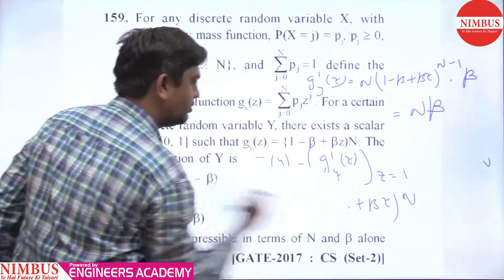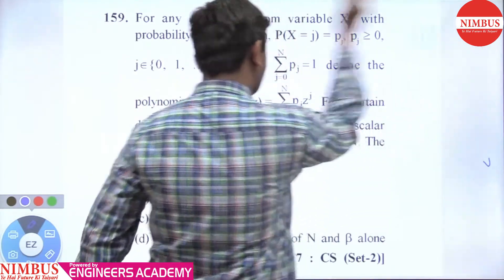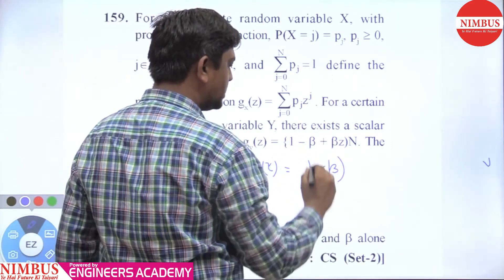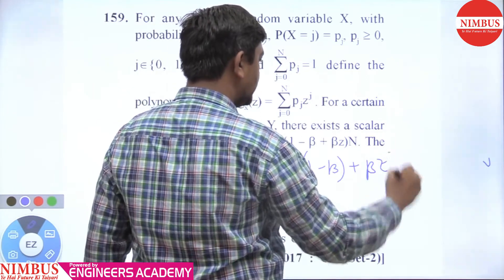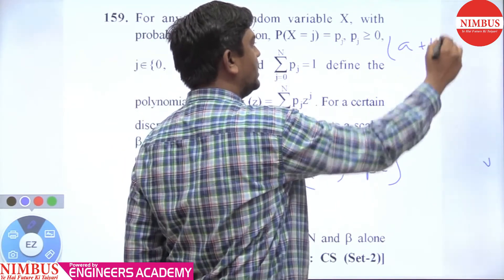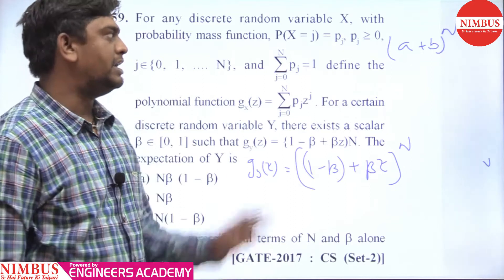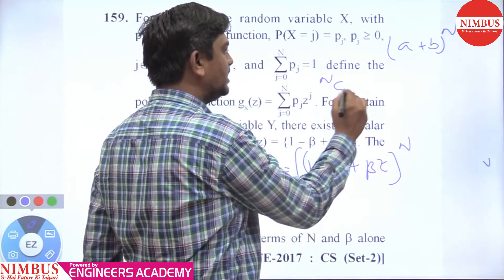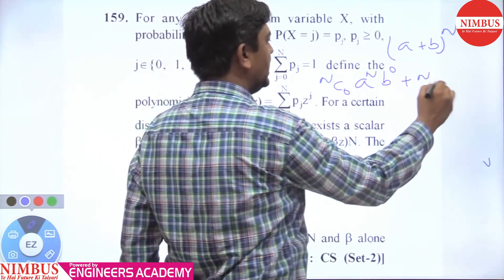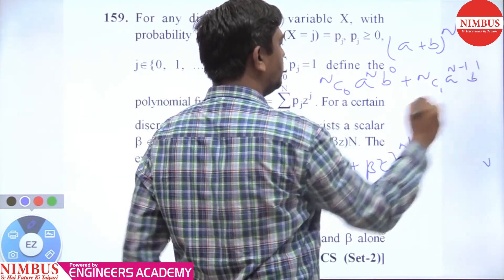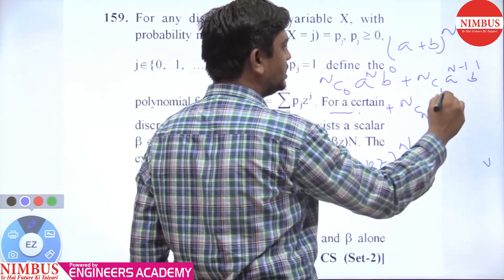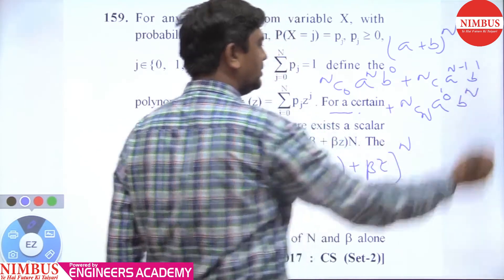Wait — there is another method to solve this question, which is also quite good. Observe carefully: g_y(z) = (1 - beta + beta·z)^n. If we have (a + b)^n, its binomial expansion is: nC0·a^n·b^0 + nC1·a^(n-1)·b^1 + ... + nCn·a^0·b^n.